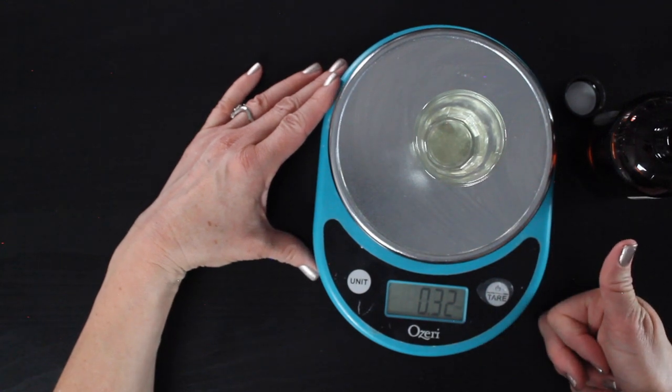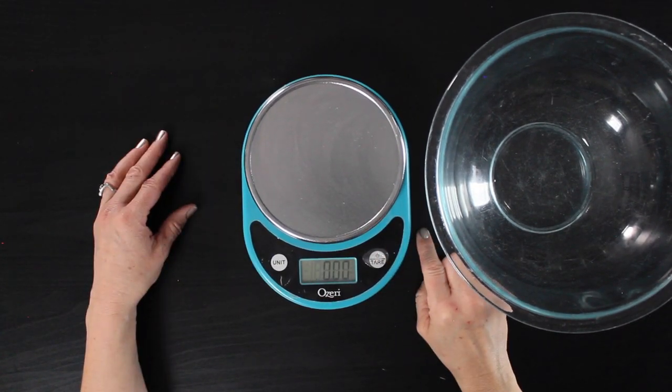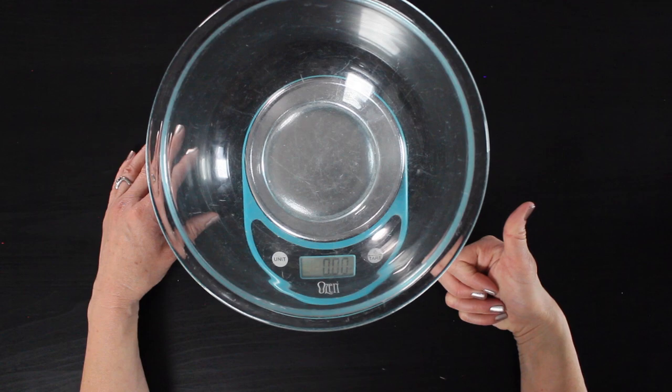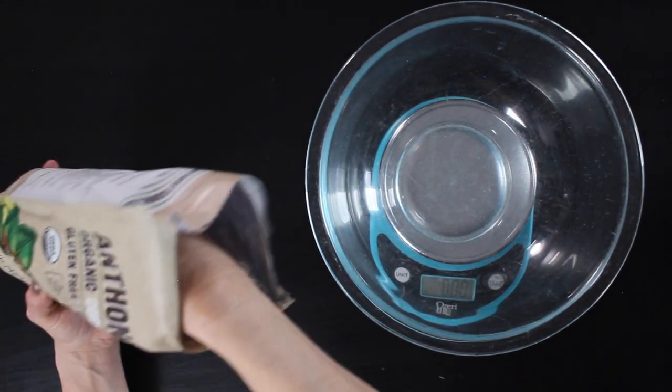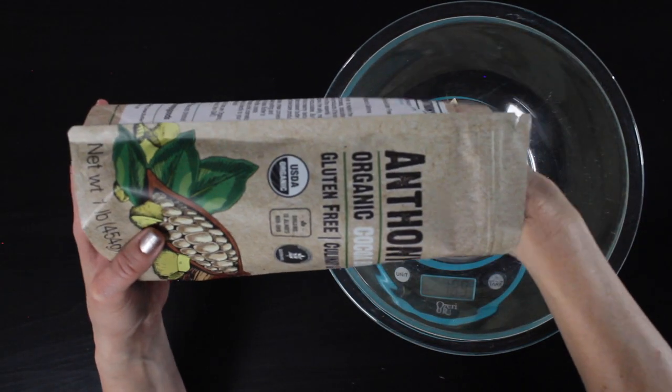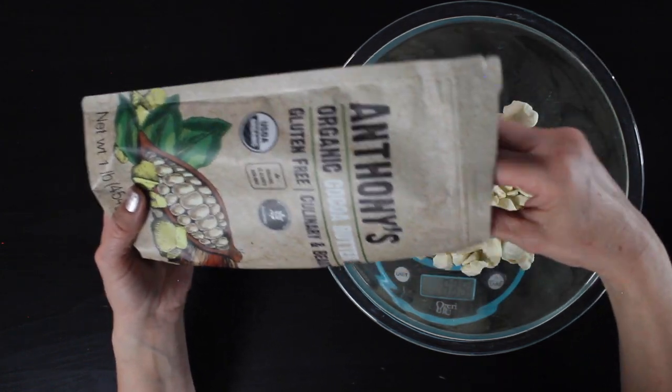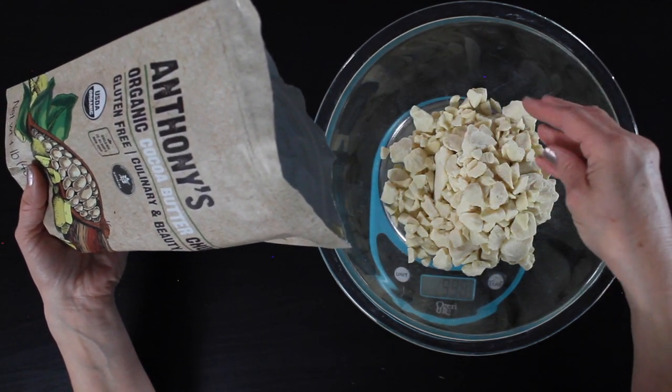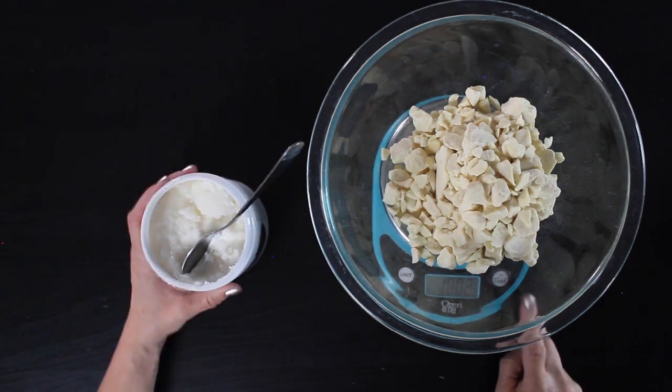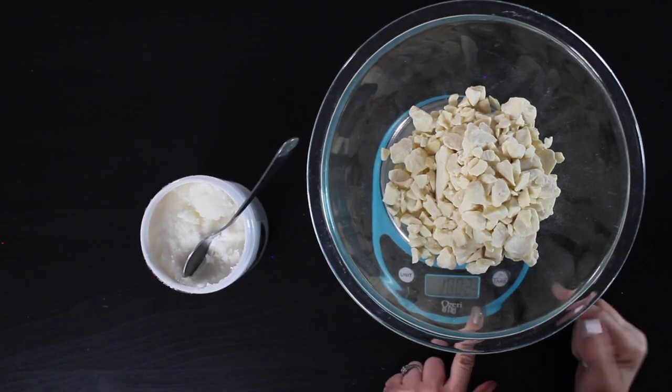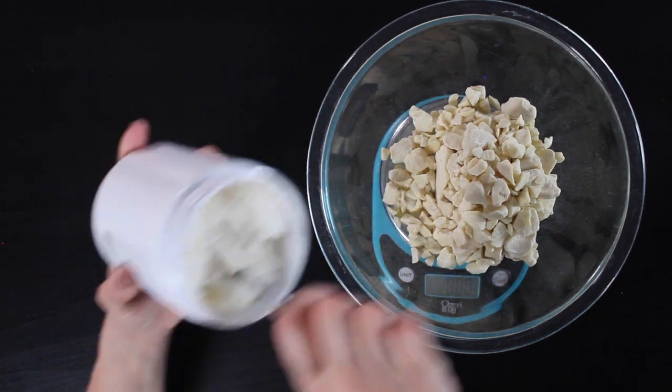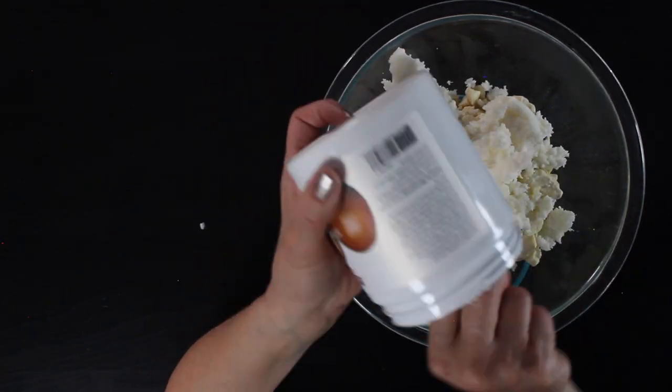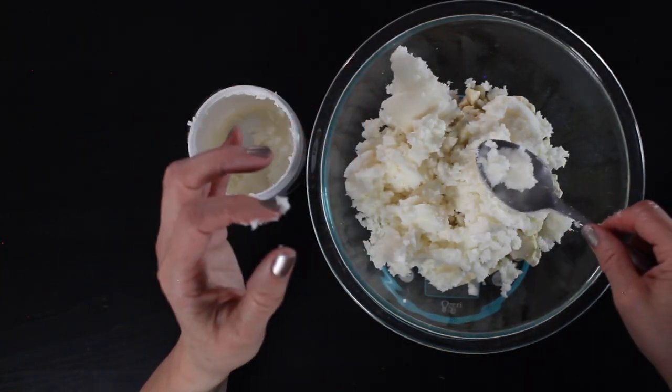Then I'm going to grab my scale again, put the bowl on it, tare it out so it zeros out that scale. And I'm going to measure in my cocoa butter. So we're using even parts of cocoa butter and shea butter. The recipe will be listed below as well as links to everything I use in this tutorial. Like I said before, I love that this is already in chunks. It makes it so fast and easy. And this is actually the third bag of this I've ordered.